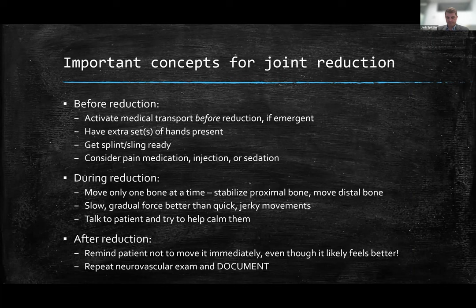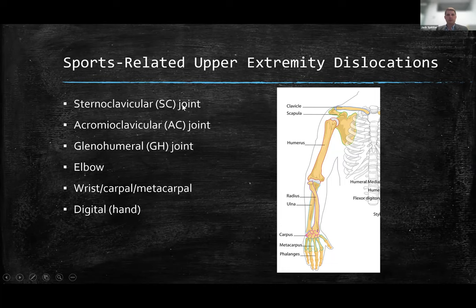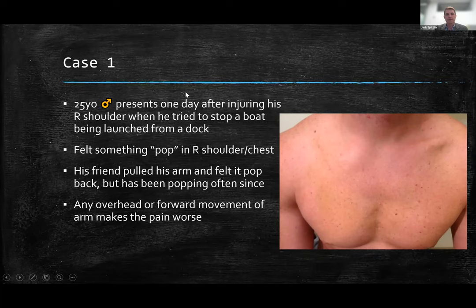Now getting into the meat of the talk about different dislocations. We're going to go from medially to laterally, or centrally to distally. We'll start with the SC joint, move laterally, and then down the arm to the fingers. Fortunately or unfortunately at Winter Park, we've seen about all of these dislocations, so I have a lot of good pictures and videos. I have to give credit to Morteza Cody, one of our other faculty and an AMSSM board member — several of these videos and pictures came from him.